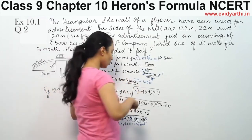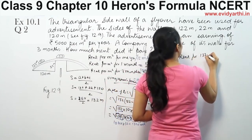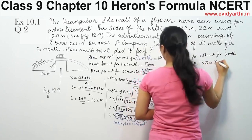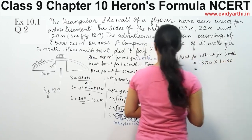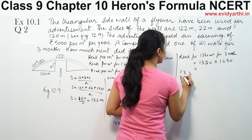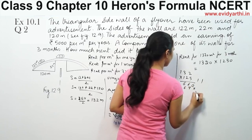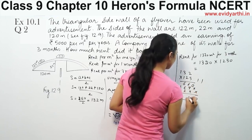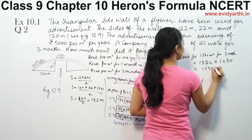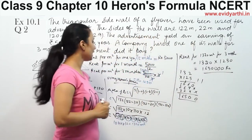Now for 1 m² the 3-month rent is Rs. 1,250. So the total rent for 1,320 m² for 3 months is equal to 1,320 × 1,250. This gives the total rent for 3 months.